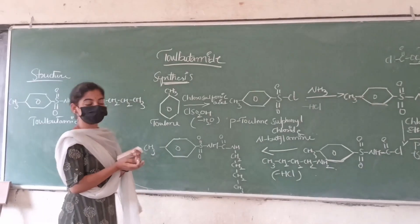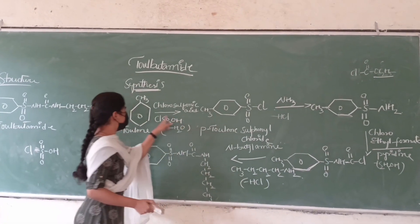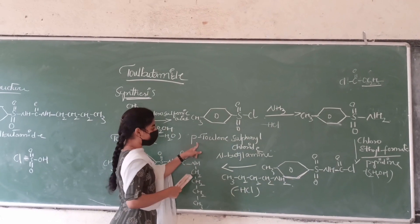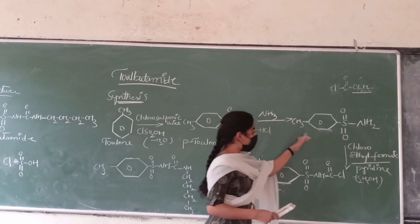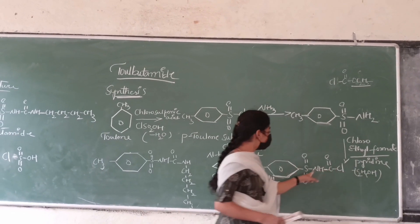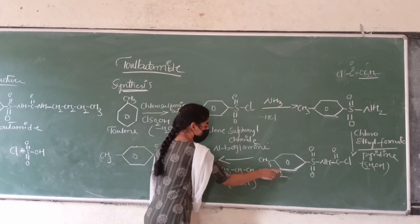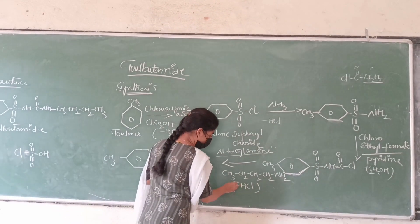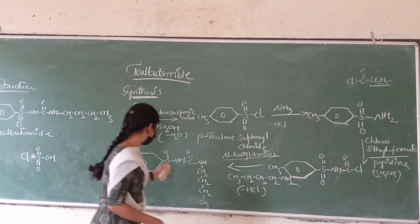So this is the synthesis of Tolbutamide. First, we take toluene and treat it with chlorosulfonic acid — removal of H2O takes place and para-toluenesulfonyl chloride is formed. This compound is treated with ammonia to form the sulfonamide. Then we treat this compound with chloroethyl formate in the presence of pyridine — removal of ethyl alcohol takes place. Finally, we treat this compound with N-butylamine, remove HCl, and the drug Tolbutamide is formed.